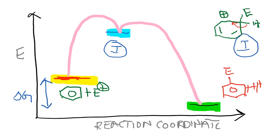Based on the Hammond postulate, the transition state—which is approximately here—resembles the product in a highly endothermic step. As a corollary, in a highly exothermic reaction, the transition state resembles the starting material. In electrophilic aromatic substitution, the intermediate formed is of high energy, so the transition state leading to that intermediate resembles the intermediate. This is important for understanding regioselectivity—ortho/para versus meta selectivity—all of which can be explained using this concept.